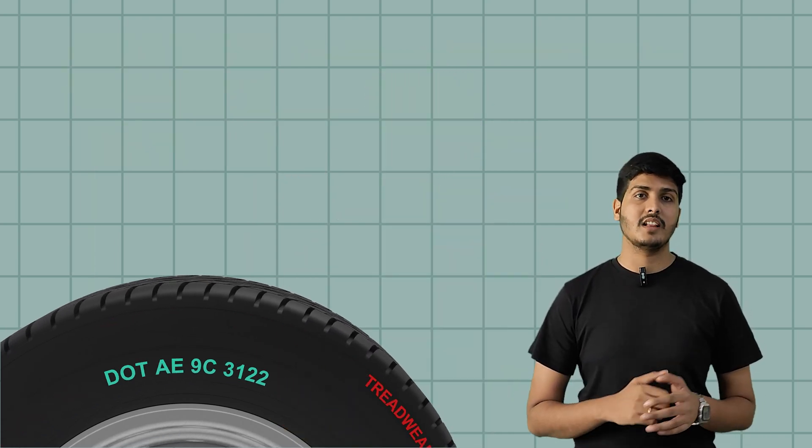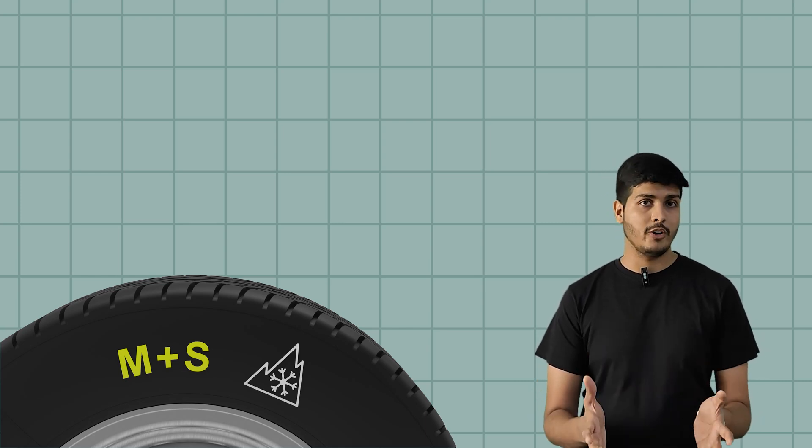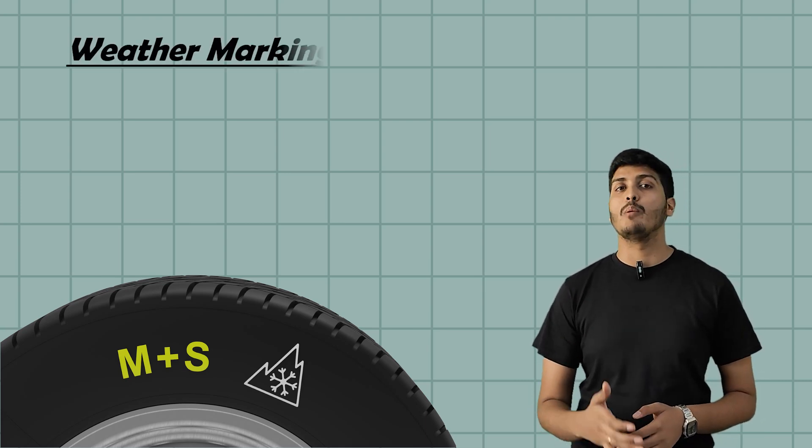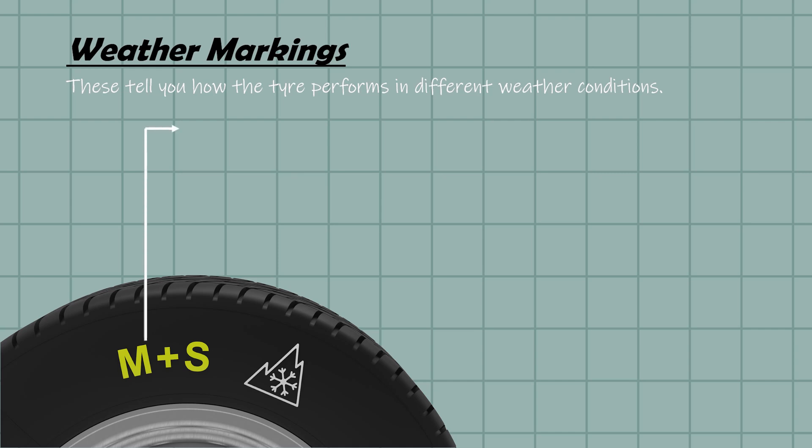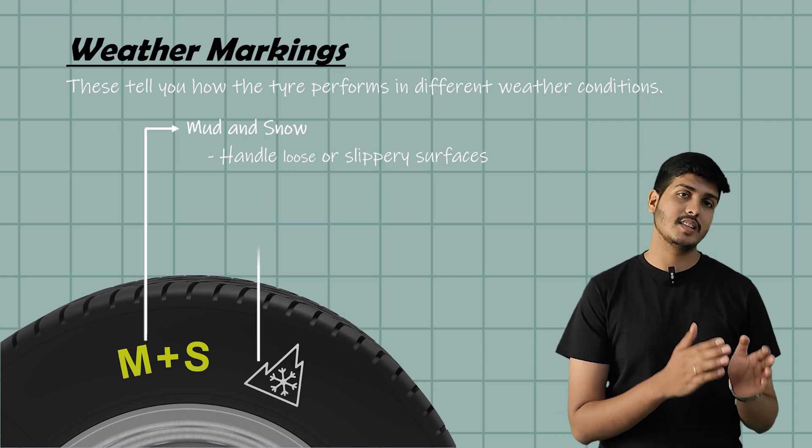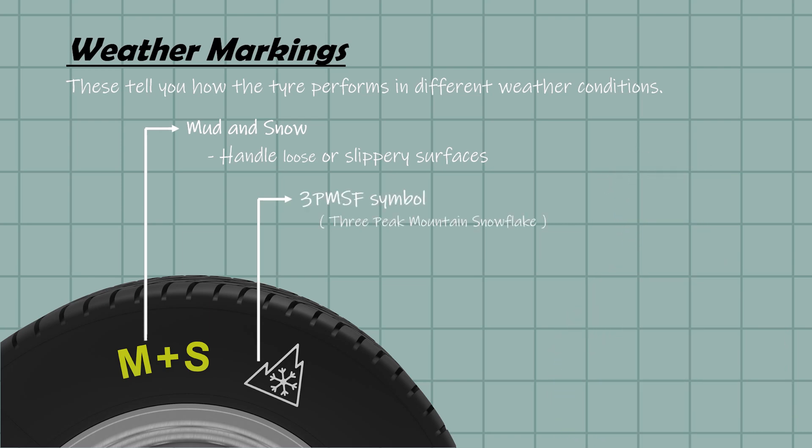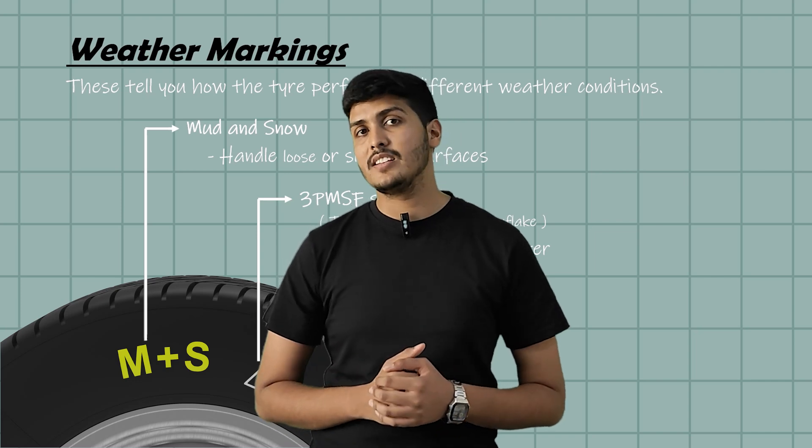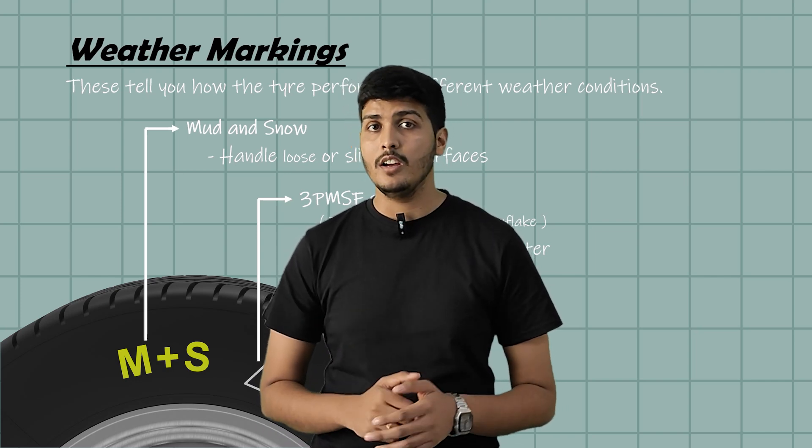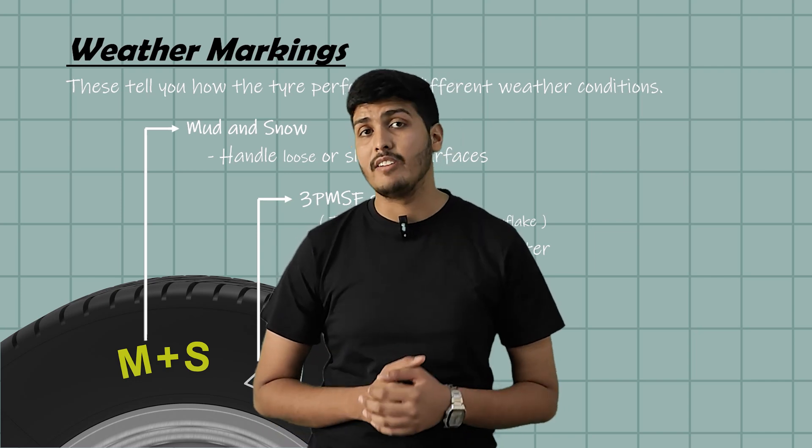Now you might also see some markings like M plus S, a snowflake inside the mountain symbol on your tire. This tells you how your tire performs under different weather conditions. M plus S stands for mud and snow. It means the tire is designed to handle loose or slippery surfaces better than regular tires. But it doesn't necessarily mean that it's good for harsh winter. Next is 3PMSF symbol which is snowflake inside the mountain. This means the tire has passed a specific test for winter traction. So if you're driving in snow, slush or icy roads this is the symbol to look for. M plus S is the general symbol. The snowflake symbol is the serious one which actually matters when you're driving in winter conditions.